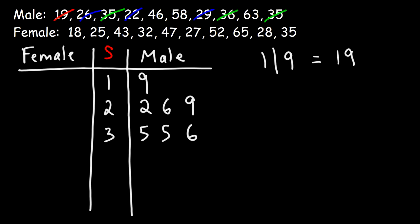Now in the 40s, I only see one number, 46. So we just write 4, then 6. Next we have 58, so we write 5, 8. And the last one is 63. So those are the ages for the males.